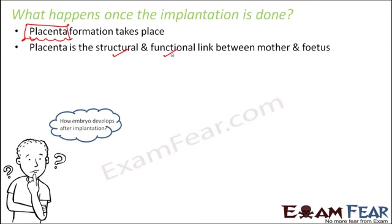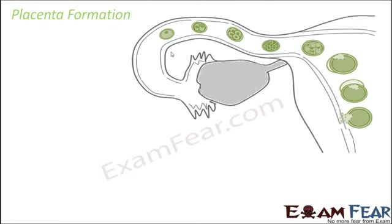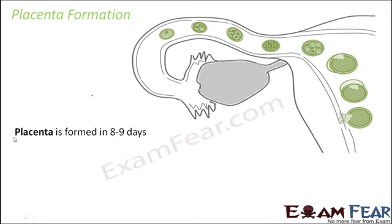The question is how exactly the embryo will develop after implantation — how this placenta will be formed and what stages the inner mass of cells undergoes to develop into a small baby. The placenta is formed in 8 to 9 days; it doesn't happen instantly, it takes time. Let us see what exactly placenta is and how it is formed.